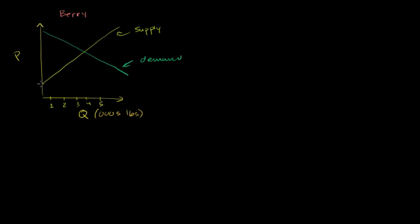And the price axis goes from $1 per pound, $2, $3, $4, $5 per pound — all in per pound.